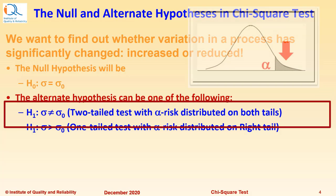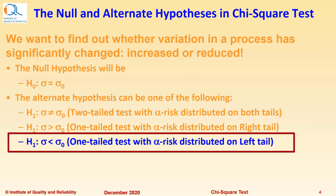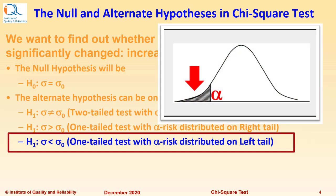H₁: σ > σ₀. This would be a 1 tail test with Alpha risk distributed on the right tail. And if it is σ < σ₀, then 1 tail test with Alpha risk distributed on the left tail.